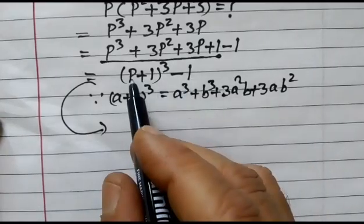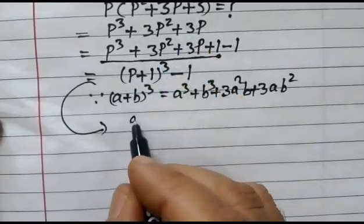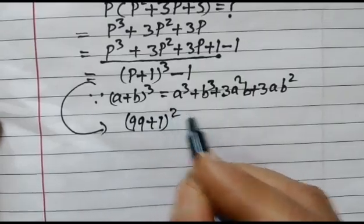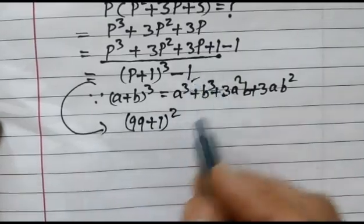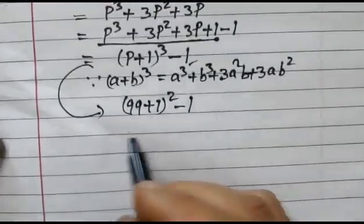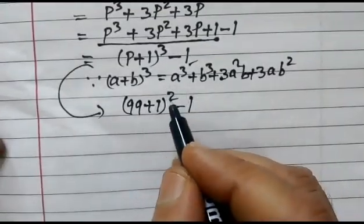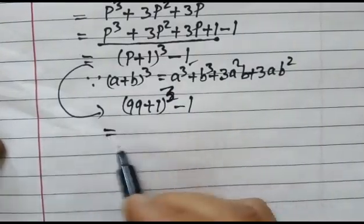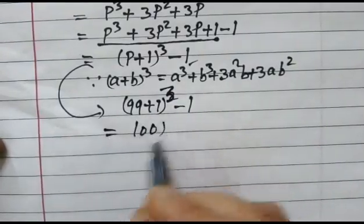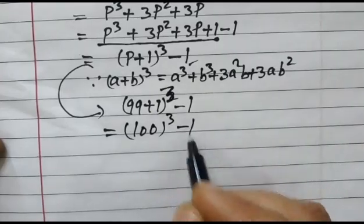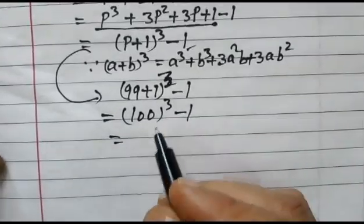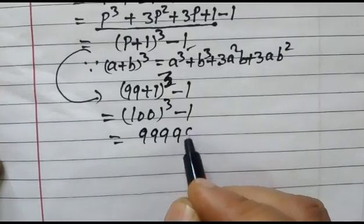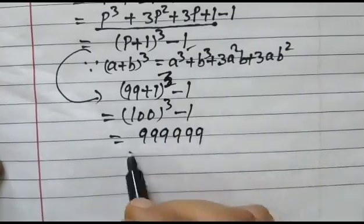...have, if we put value of P as 99, we get (99 + 1)³ - 1. Sorry, whole cube is equal to (100)³ - 1. So we get final answer 999,999. OK, thank you.